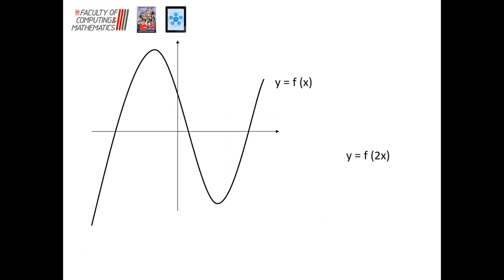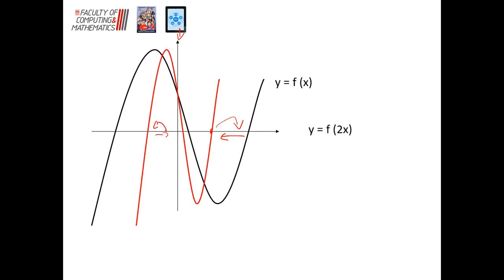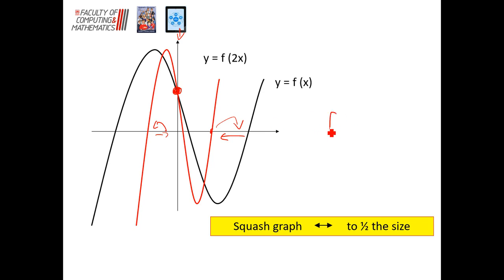This next one is f of 2x. For every x value, you're getting the x value twice as far away and dragging that back. These values are going to squeeze in towards that y-axis — it's squeezing the graph in. Notice that zero, when you double zero, it's still zero. If you go to 4, you're getting f of 8 and dragging that value back. It's squeezing in by the factor of what's inside. So if you're doing f of kx, it's squeezing in towards the y-axis by that factor. If it was 3, 12s would become 4s, 30s would become 10s — squeezing in by that factor.